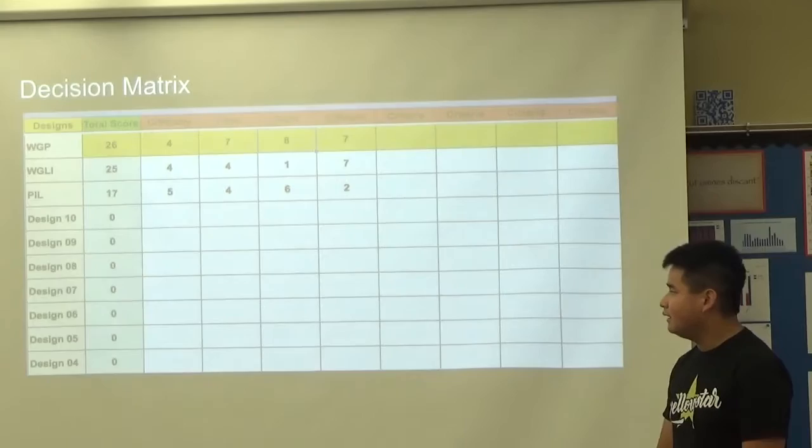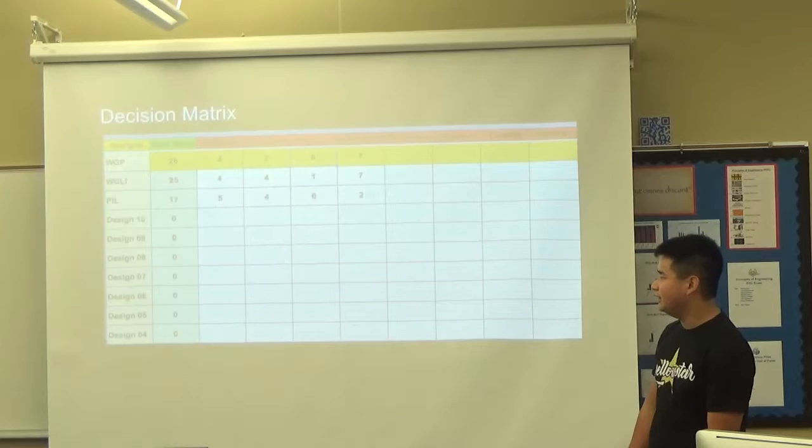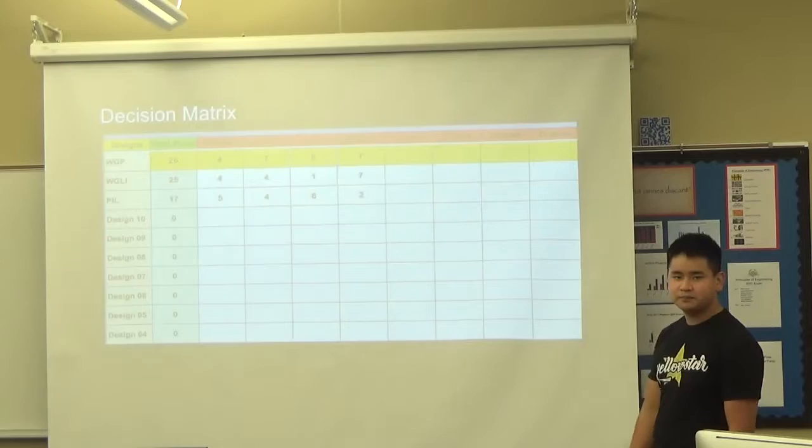This is our design matrix. The W stands for wheel and axle. The G stands for gear mechanism. The P stands for pulley. We actually tried the wheel, gear mechanism, the lever, and the incline plane first.